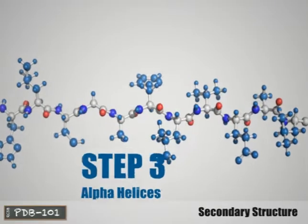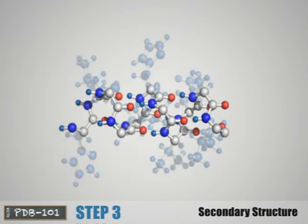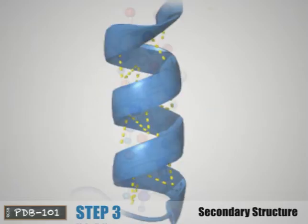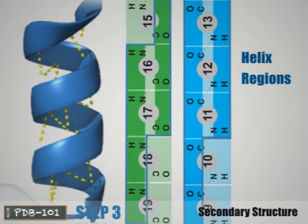Some sections of amino acid chains curl and form alpha helices due to hydrogen bonds between NH and CO groups. The helix regions on the model are marked on the chains with darker shades of blue.